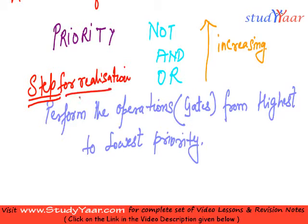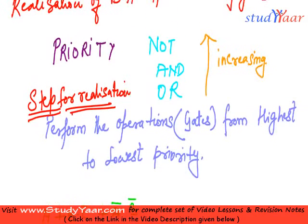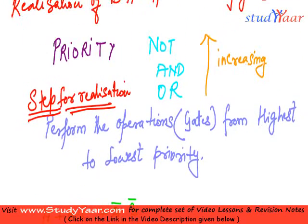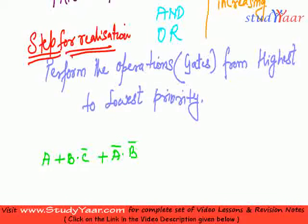So let's take an example. Let's suppose I have an expression which is like A plus B dot C bar plus A bar dot B bar. So first you determine the priority. NOT is having the highest and then AND and then OR. And you perform the operations from highest to lowest priority.